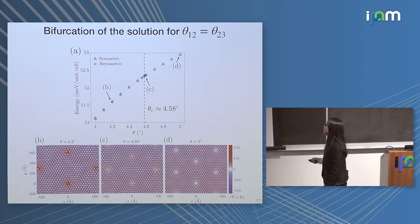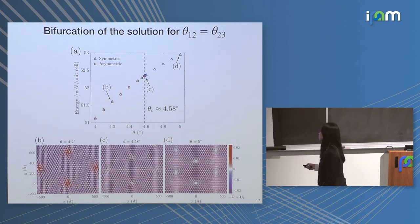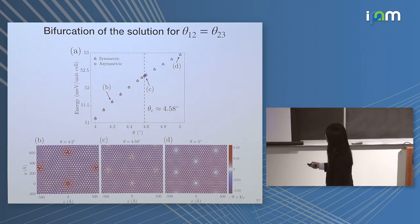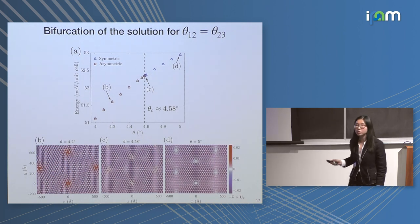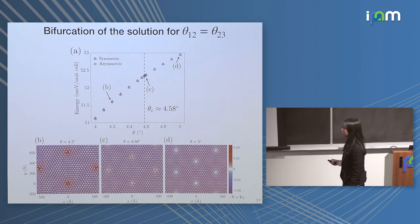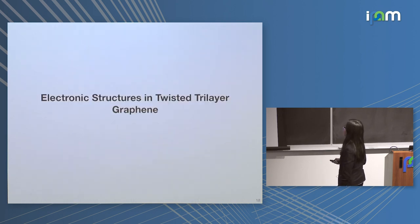Looking at solutions at a few different points on this curve, specifically near the critical twist angle, the ground state asymmetric solution becomes almost symmetric. So we know that this bifurcation exists, and this is qualitatively different than twisted bilayer graphene, because in twisted bilayer graphene the relaxation never breaks the system symmetry, at least in the in-plane case.